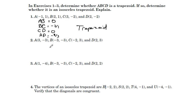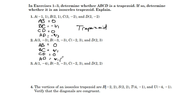Number two, let's find our slopes again. We've got AB, BC, CD, and AD. Slope of AB is zero. Slope of BC is six over one. Slope of CD is zero. Slope of AD is six over negative one. One pair of parallel sides — that's a trapezoid.